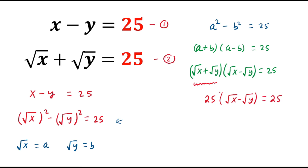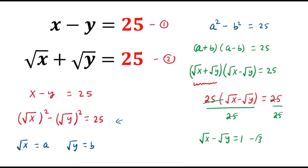Now divide both sides by 25. The 25s cancel out, and we get square root of x minus square root of y equals 1. Let us consider this as equation number third.